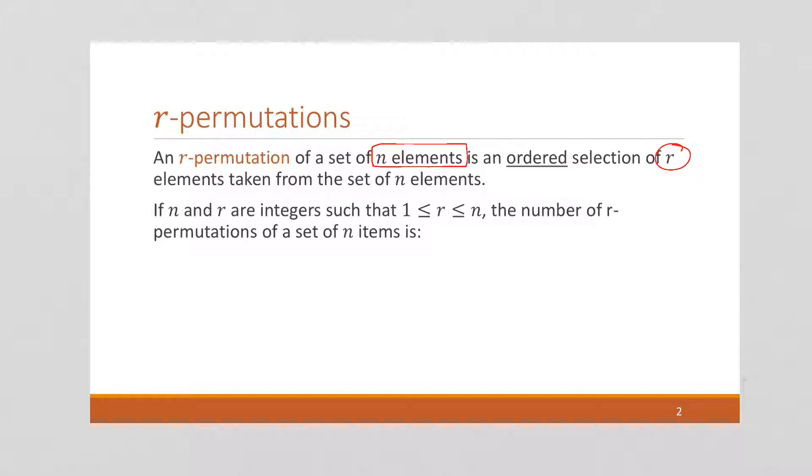So if we want to think about this, we can think of the set A, which is a, b, c, d, and e, which means the size of A, which equals n, because we have this set of n elements, is going to be 5.